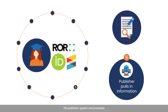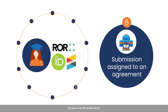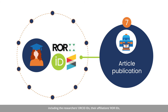The publisher system and processes then ensure the research funding acknowledgement in the full text is in sync with the underlying structured metadata. In case of an OA publication, the publisher can also automatically assign the submission to an agreement and hence flag the publication funder. The publisher assigns a DOI to the article and upon publication, submits its metadata, including the researcher's ORCID IDs, their affiliations' ROR IDs, and their funder ROR ID and grant DOIs to Crossref.